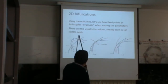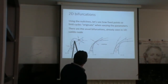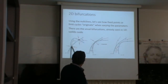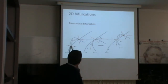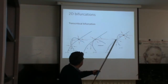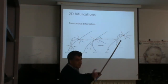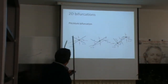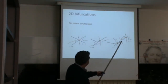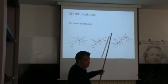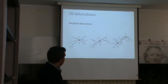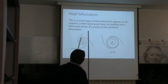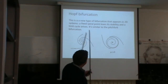In two dimensions, you can have the same bifurcations as before: saddle-node, transcritical, and pitchfork bifurcations. And there is a new bifurcation called the Hopf bifurcation — named after Hopf who studied it first — which is a spiraling stable fixed point that becomes unstable. Instead of spiraling towards the fixed point, it starts spiraling away, and a limit cycle appears.